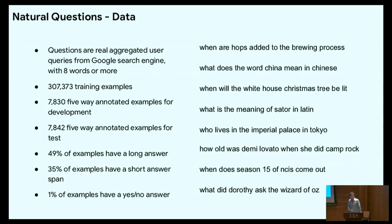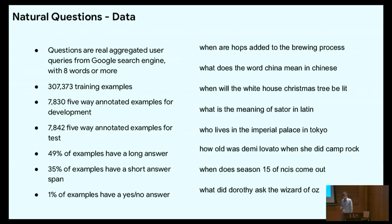Here are some statistics from this data collection. The questions are real aggregated user queries from the Google search engine — around 300,000 training samples. We have five-way annotated data for development and test. About 50% of the time there's an answer on the page; 50% of the time there's no answer, so determining whether an answer exists is a significant part of the problem. About 35% of examples have both a long and short answer. And about 1% of the time we have yes-no questions, which resulted in a spin-off corpus called Boolean Questions. Example questions include: 'When are hops added to the brewing process?', 'What does the word China mean in Chinese?', 'When will the White House Christmas tree be lit?', 'Who lives in the Imperial Palace in Tokyo?'